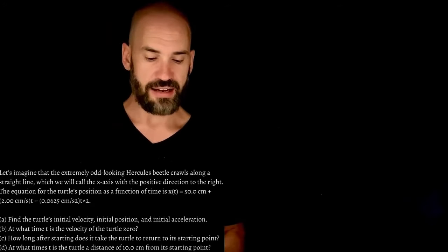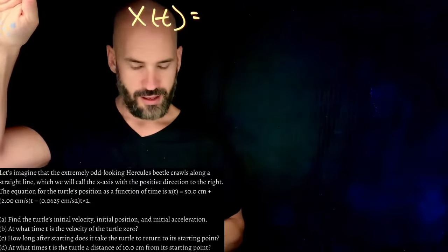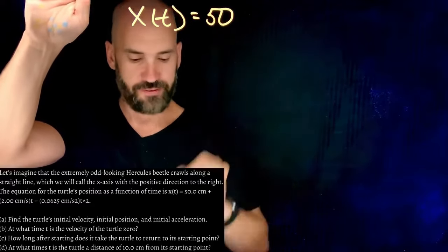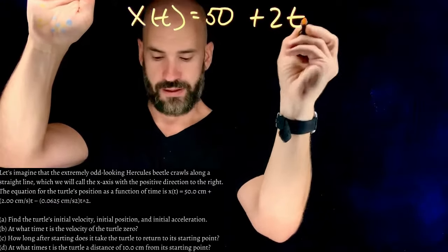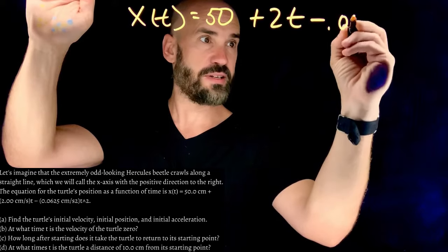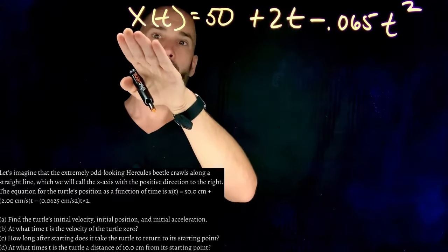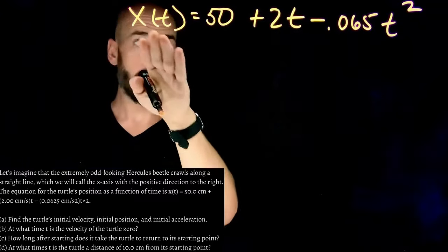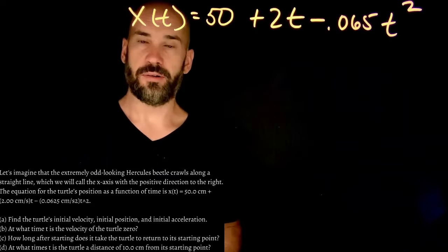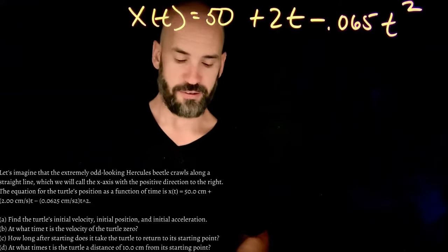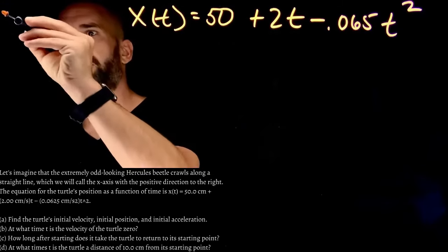So imagine that we know that the position function, x of t equals 50 centimeters, this is all centimeters, plus 2t minus 0.065 t squared. This is how my position of this beetle changes as a function of time. And there's a lot we can figure out here. And I'm about to show you how much we can figure out. So let's just do it. A, find the turtle's initial velocity, position, and acceleration. So this is going to be part A. Initial position, velocity, and acceleration.